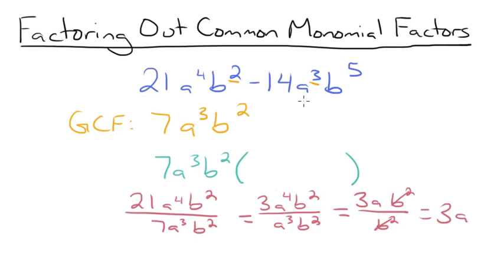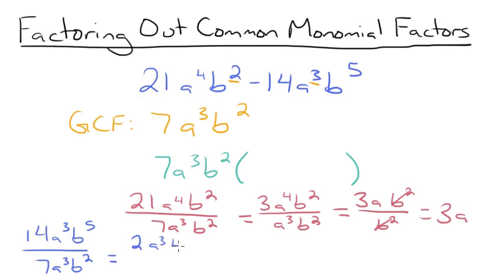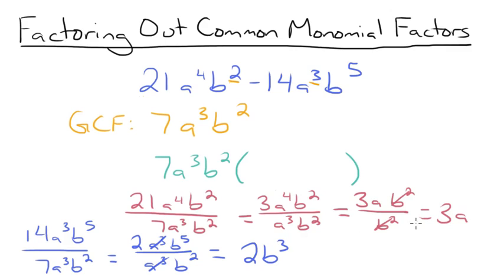Now we do the same thing for our second term: 14a cubed b to the 5th divided by 7a cubed b squared. 14 divided by 7 is 2. The a cubed terms cancel out. And b to the 5th divided by b squared is b cubed because 5 minus 2 is 3. So this simplifies to 2b cubed. Remember, since this was negative 14, we should have a negative sign carried through. Negative 14 divided by 7 is negative 2, so make sure you don't forget that negative sign.